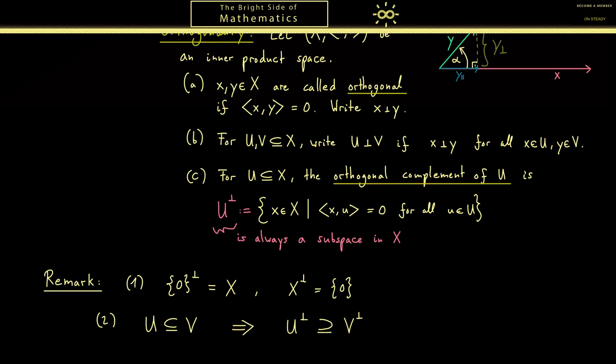For this let's choose an x from V perp, which means that by definition we have x with v in the inner product is zero for all v in V. However because U is a subset of V we can write down the same thing for all u in U. Hence now by definition again we have x in U perp, and that's what we wanted to show.